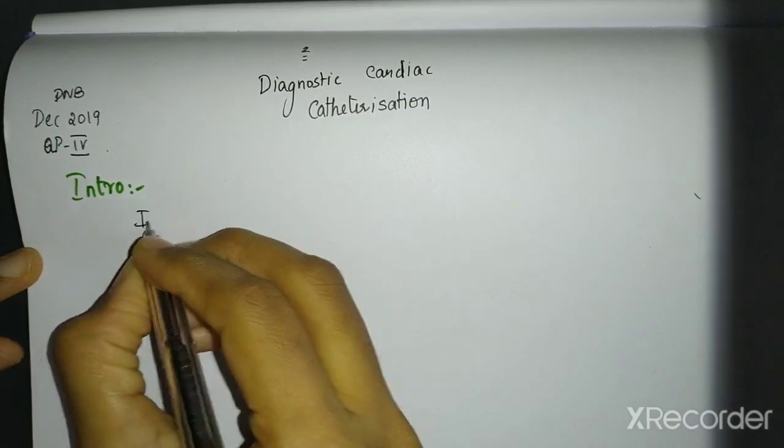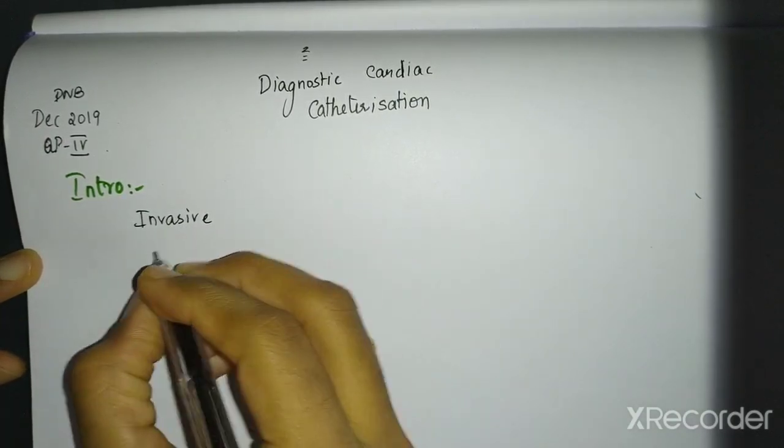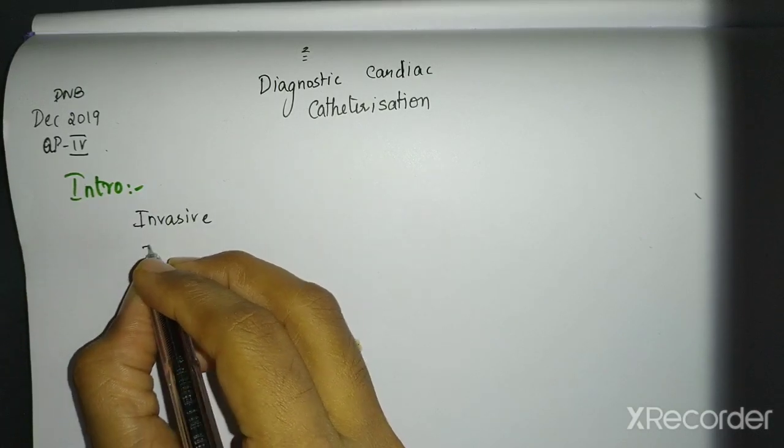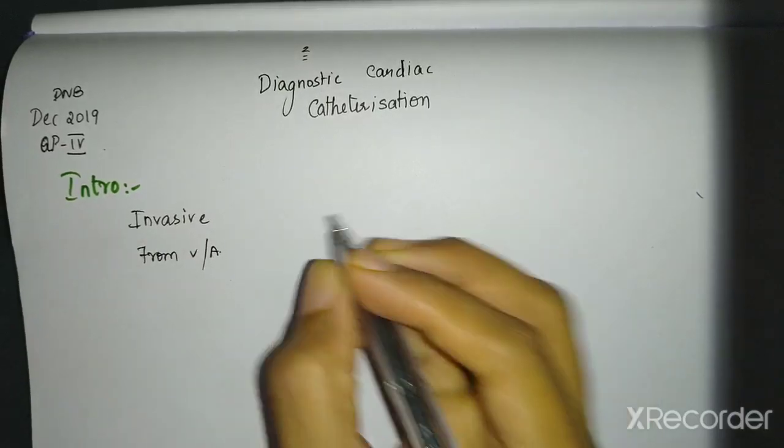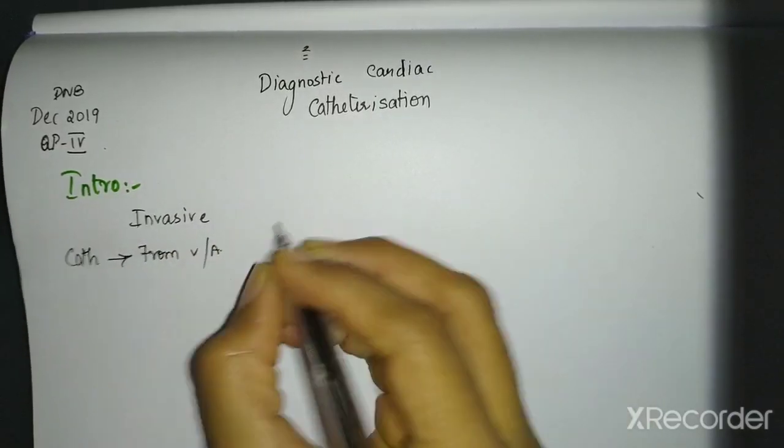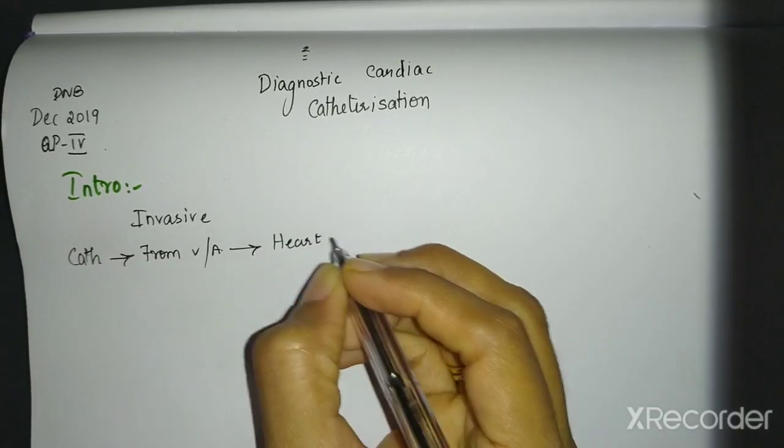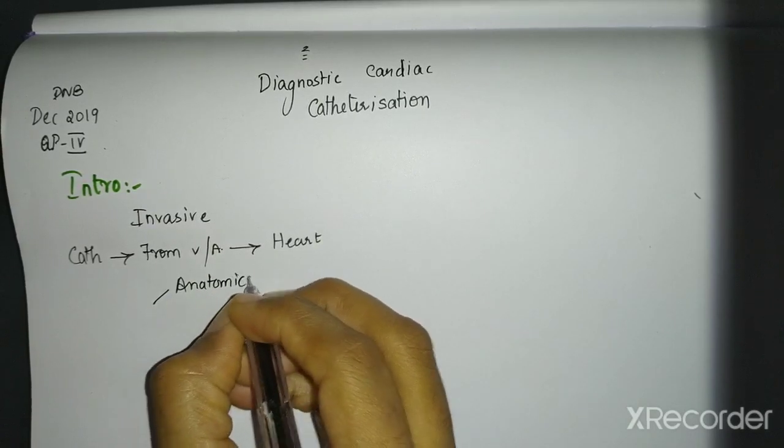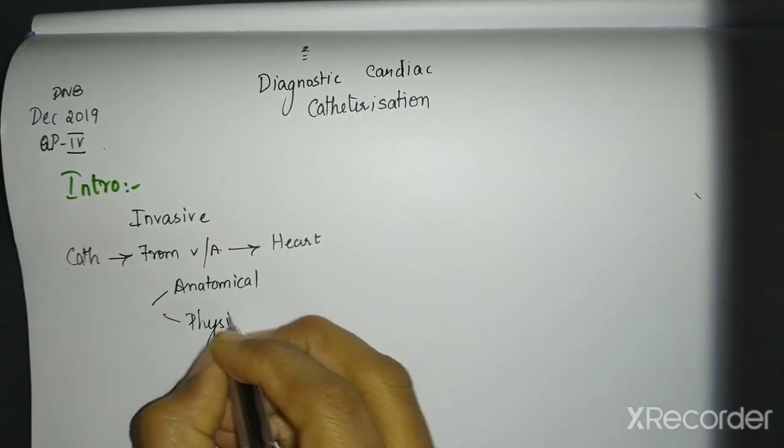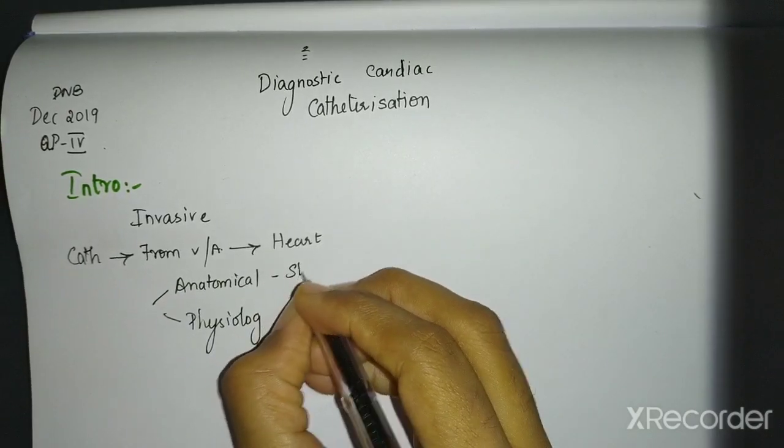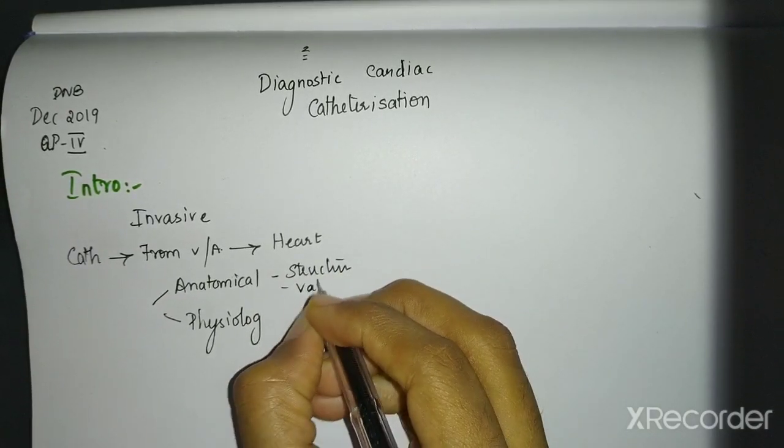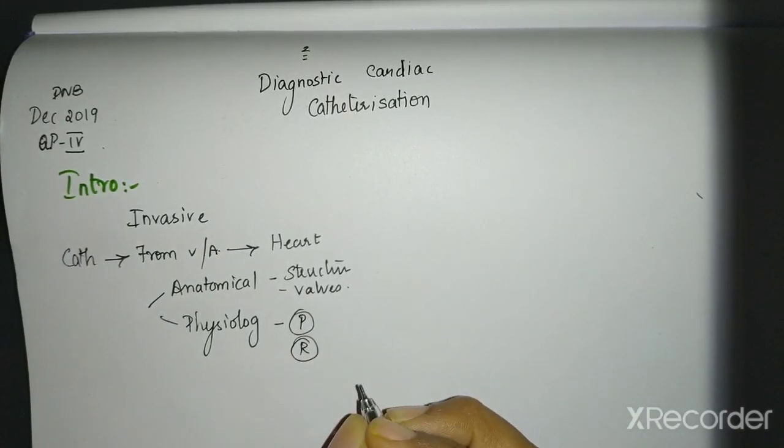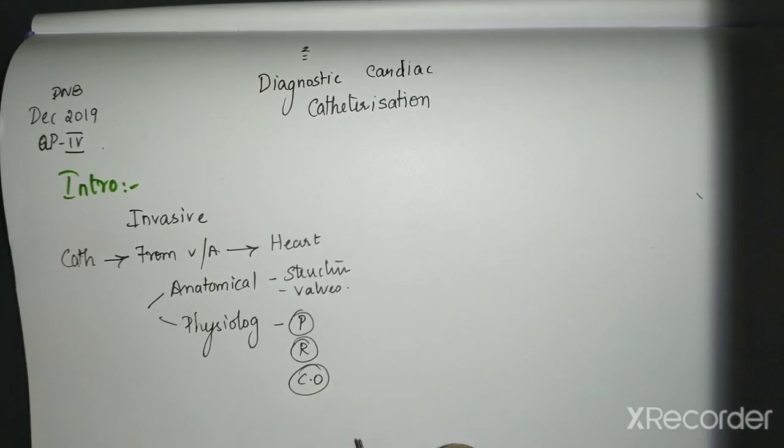What is cardiac catheterization first of all? Cardiac catheterization is an invasive procedure. You put in a catheter from vein or artery. The catheter goes from vein or artery to heart and you do various measurements. So it can be anatomical measurement or it can be physiological or functional. Anatomical is you can see the structures, you can see valves if they are deformed. Physiological is pressure measurements, resistance measurements, cardiac output measurements.